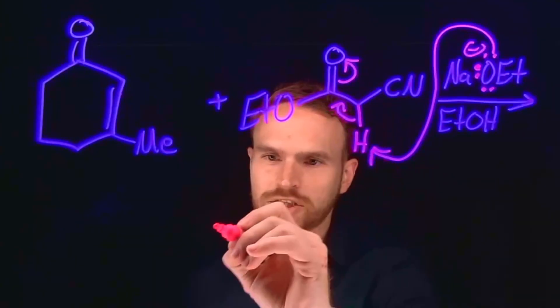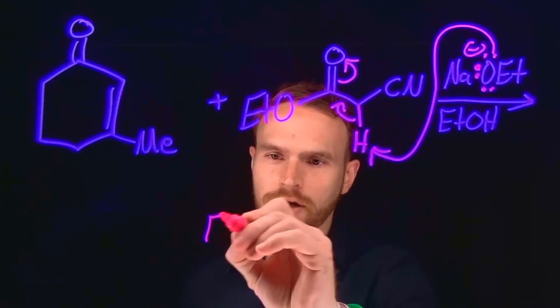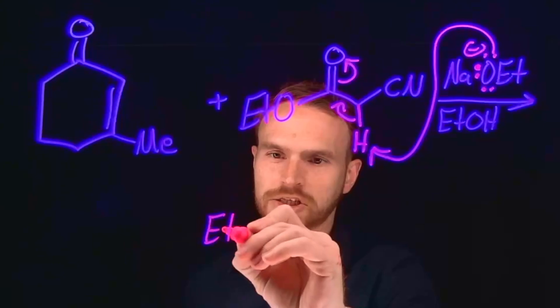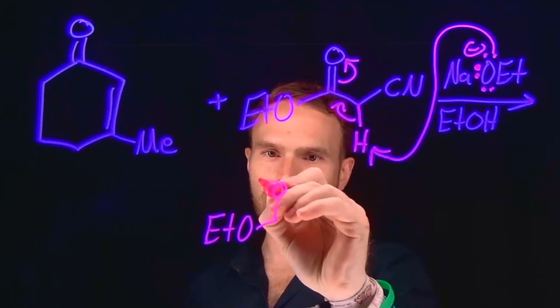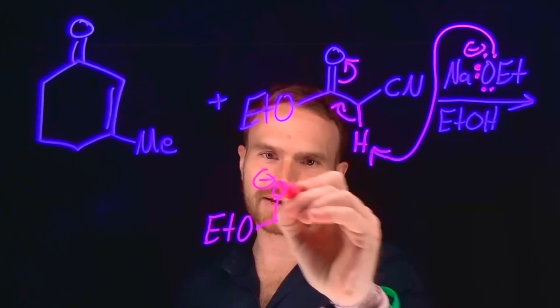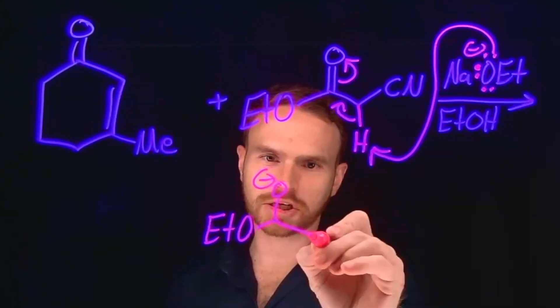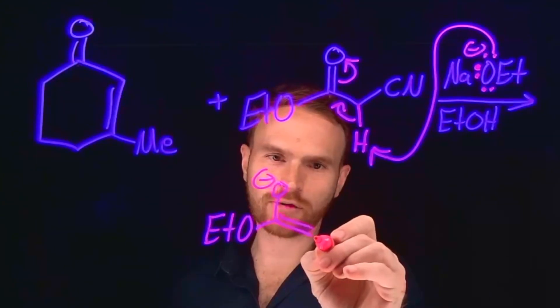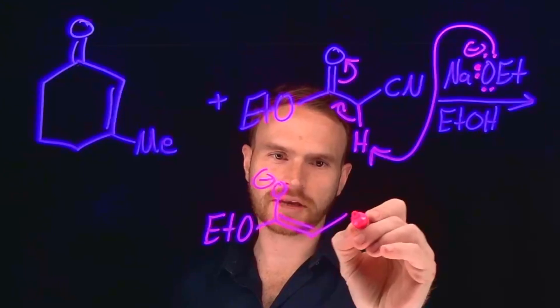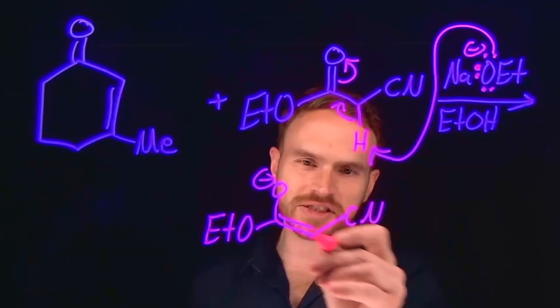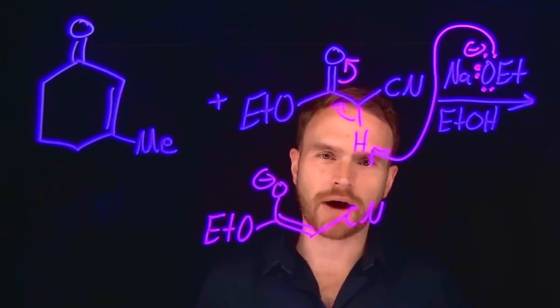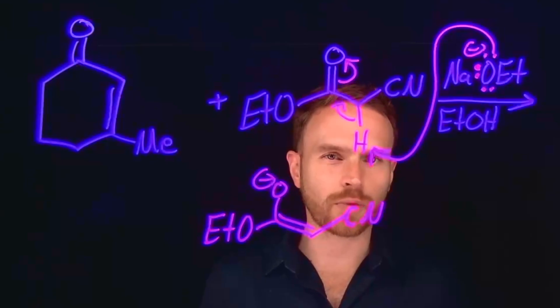So then we can redraw what the product of that transformation might look like, where now we have formed a negatively charged oxygen here, we have an alkene at this position, and then we still have this cyano group here.